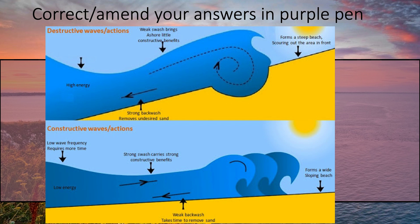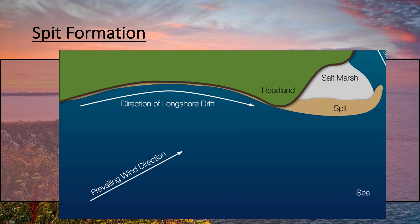Right, these are the two different waves — constructive and destructive. There's a full video on it if you've forgotten, go back and watch that. Hopefully you've got something similar to the diagram on the board. The destructive wave has a strong backwash, weak swash, high energy, and high frequency. Constructive waves are pretty much the opposite — weak backwash, strong swash, low energy, and low frequency. If you haven't got that, add those into your diagram.